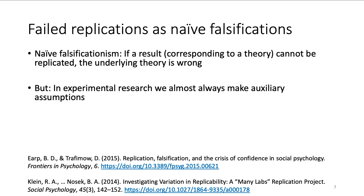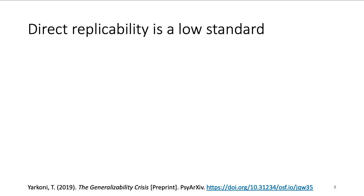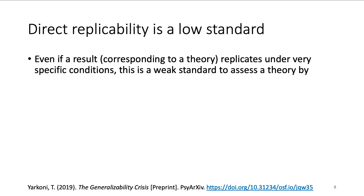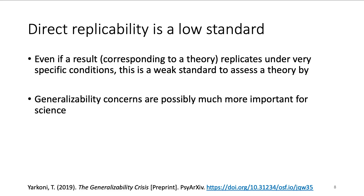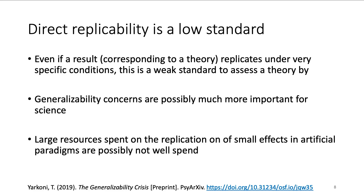For example, when conducting an experiment, we might assume negligence of experimental and daytime effects, or the irrelevance of the resolution of the computer screen on which we present stimuli. Even under lab conditions, it is hardly ever possible to control for all of these implicit assumptions, which necessarily leads to variability in measurements and potentially also in replicability. The bottom line is that we should consider replication attempts as evidence for or against a given effect, model, or theory, but they are rarely absolute falsifications. Another aspect to consider is that replicability is a low standard for research. Even if a given result replicates under very specific conditions, this is rarely the answer to the question we are really interested in — does this result also generalize to other conditions, perhaps outside the laboratory? Large resources are being spent on the replication of small effects and artificial paradigms. Is this even worthwhile, or should we spend our resources otherwise?